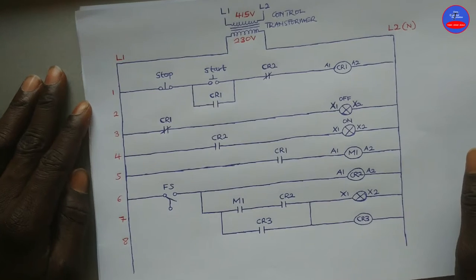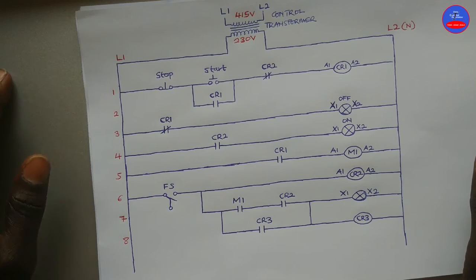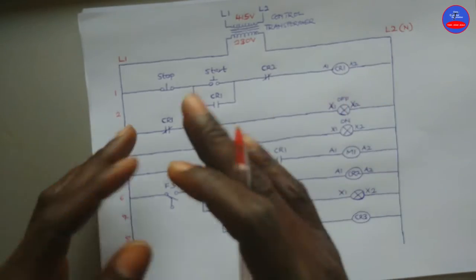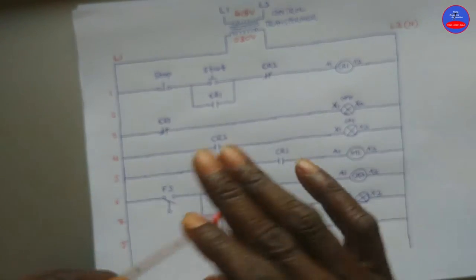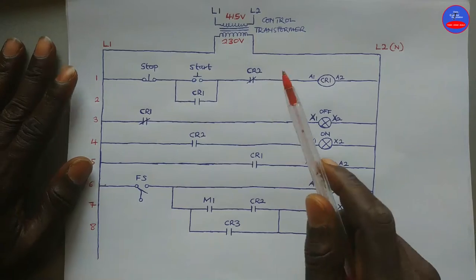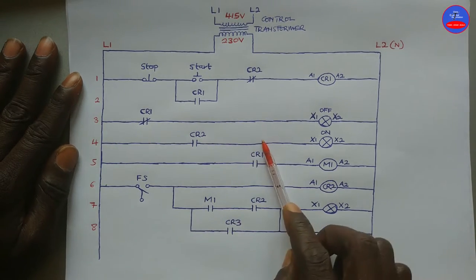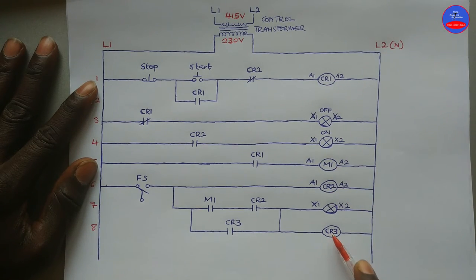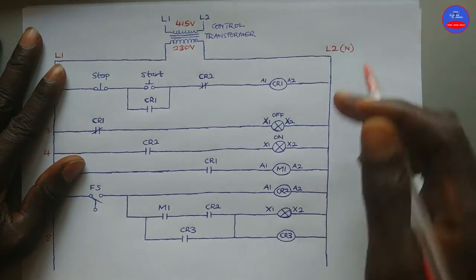Now let's move on to the next one, which is numerical cross-referencing. Numerical cross-referencing helps us to identify the location of components and contacts in the control diagram. In this diagram, we are going to identify the number of contacts on each coil device. Our coil devices are CR1, M1, CR2, and CR3. We put the numbers in parentheses at the right side of each of these coil devices.